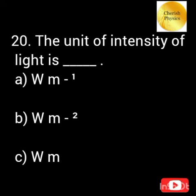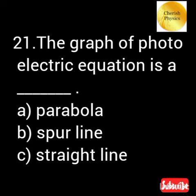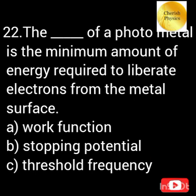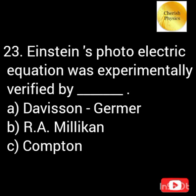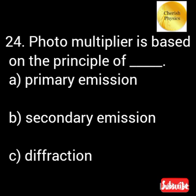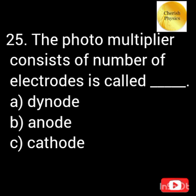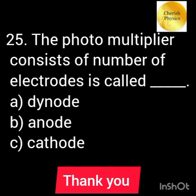Give the unit of intensity of light. The graph of the photoelectric equation is in the form of. The minimum amount of energy required to liberate electrons from the metal surfaces. Einstein's photoelectric equation was experimentally verified by. Photomultiplier is based on the principle of. The photomultiplier consists of a number of electrodes called as. Thank you.